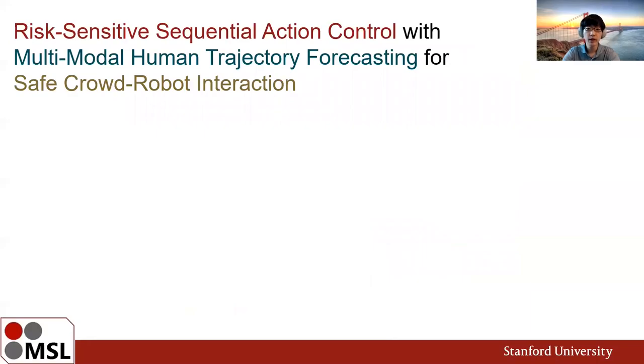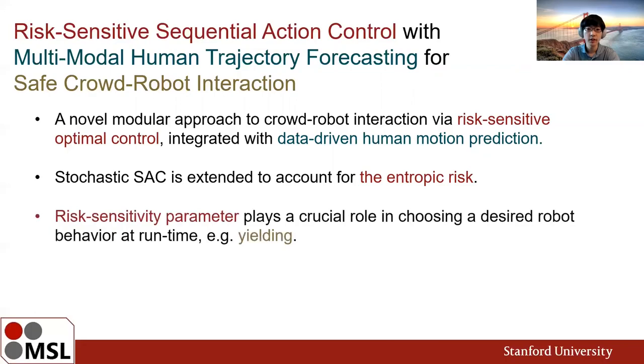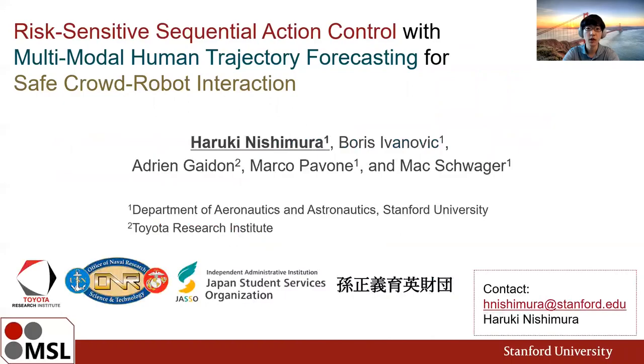In summary, we have presented a novel modular approach to crowd-robot interaction via risk-sensitive optimal control and data-driven human motion prediction. As a theoretical contribution, we have extended and generalized the stochastic SAC algorithm to account for the entropic risk objective. The risk-sensitivity parameter was found to play a crucial role in specifying a desired robot behavior at runtime, such as yielding. We confirmed in experiment that our risk-sensitive robot combined with robot future conditional prediction of Trajectron++ achieves safe and efficient navigation. Thank you for your attention. Please reach out to me with any questions you may have, or see me at the interactive session.